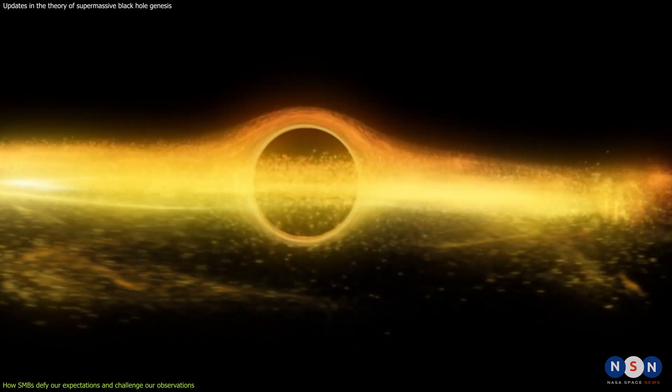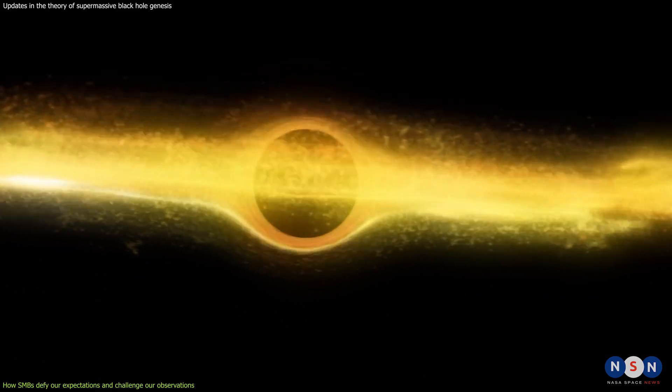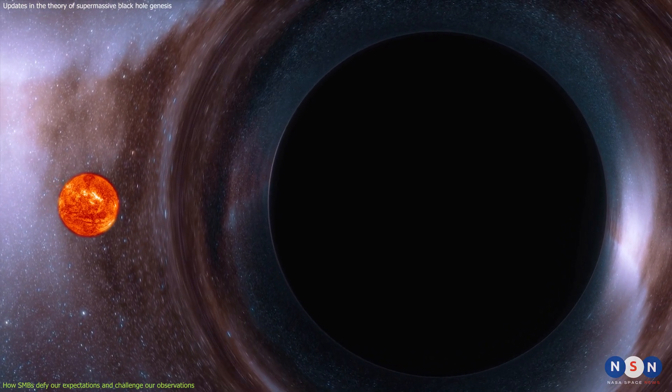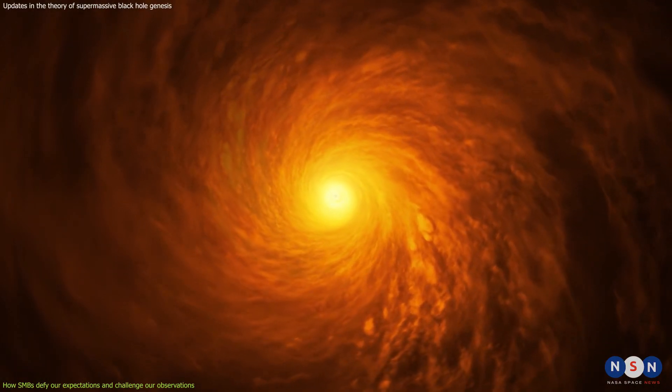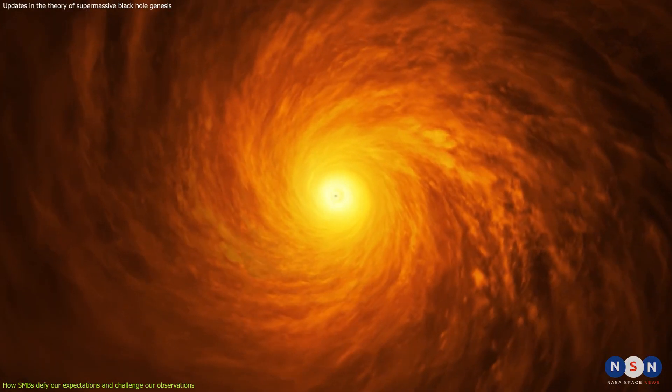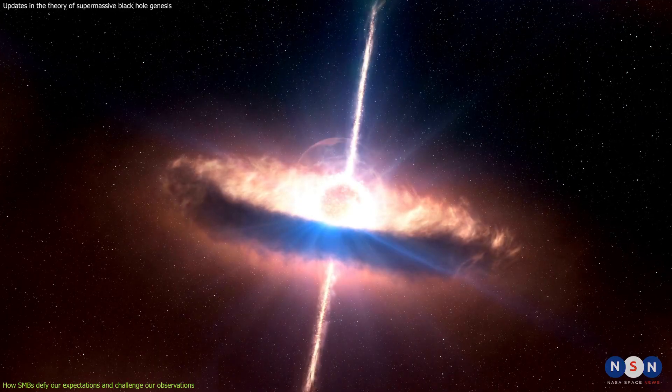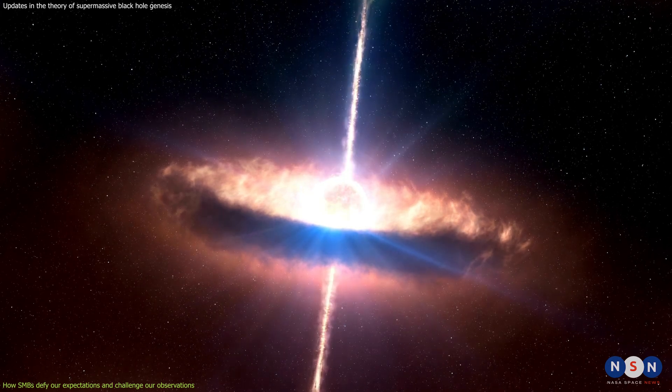But then there are supermassive black holes, which are on a whole different level. These black holes have masses ranging from millions to billions of times that of our sun, and they are usually found at the centers of large galaxies where they dominate their environments with their immense gravity.